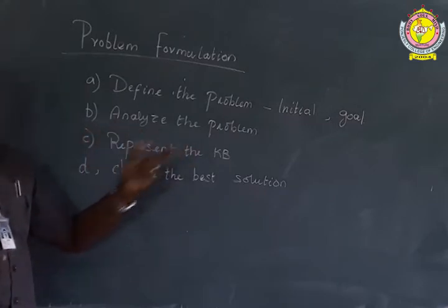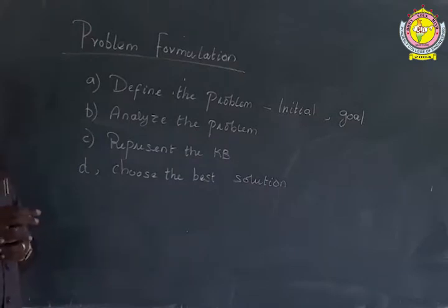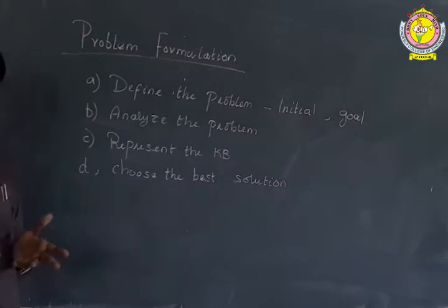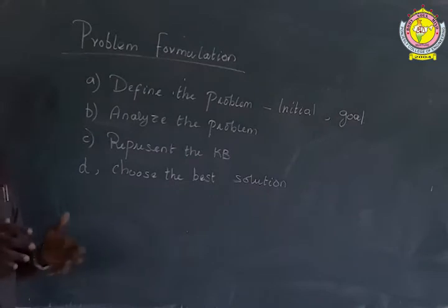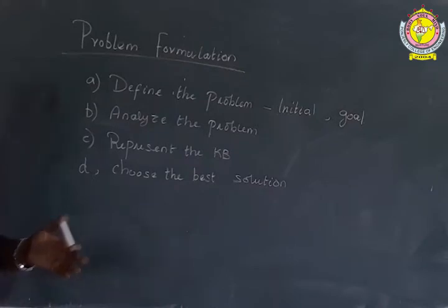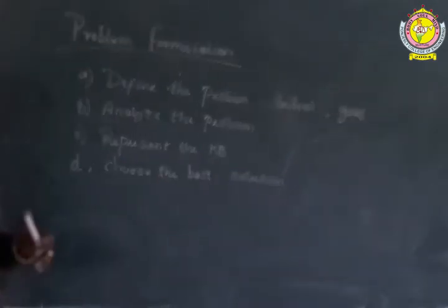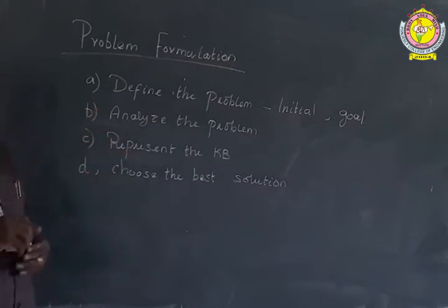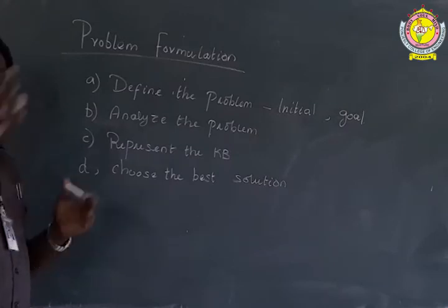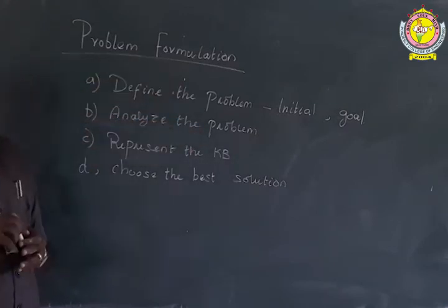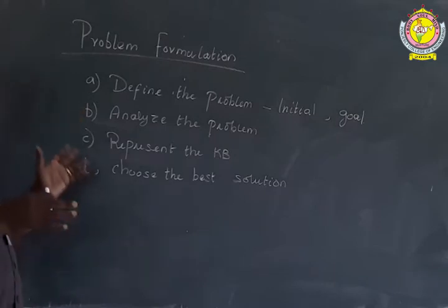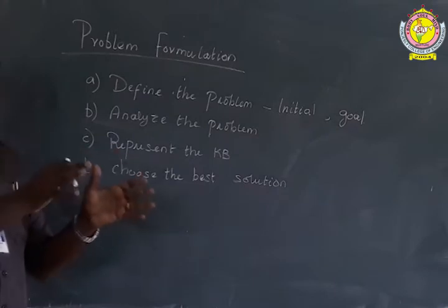The second step is to analyze the problem. There will be different ways to reach the goal, so we have to see what are the possible actions and ways in which we can reach it. For example, for throwing a ball into a basket, I can either run towards the basket and throw from nearby, or from the place where I stand I can throw the ball. So we have to analyze all these different possible ways to solve the problem.